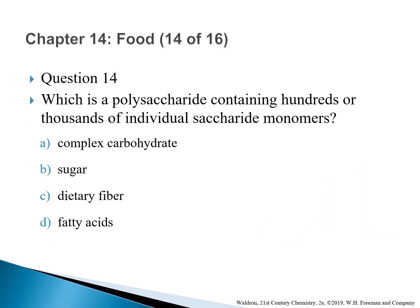Question 14: Which is a polysaccharide containing hundreds or thousands of individual saccharide monomers? The correct answer is A — complex carbohydrate. The terms polysaccharide and complex carbohydrate are often used interchangeably.